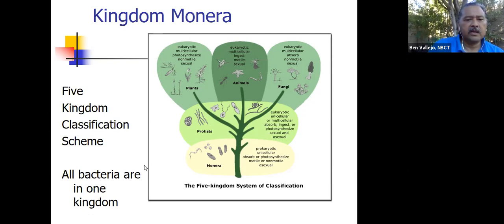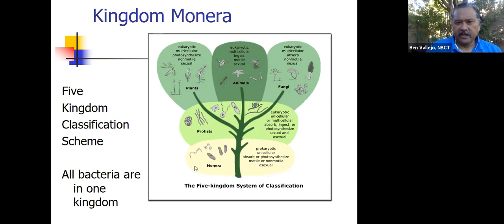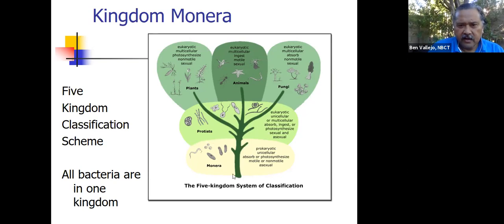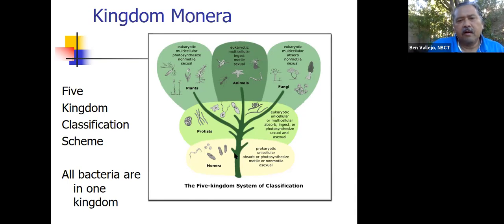This is the old-school Kingdom Monera — this is the way I learned it. Back in college, we were still learning about the five-kingdom classification scheme. It says here all bacteria are in one kingdom — what we used to call Monera. That's an archaic term now, one we don't use. You have all bacteria in one group in five different kingdoms.